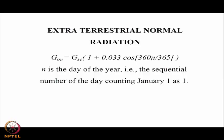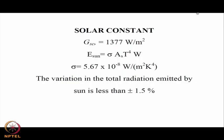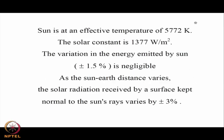On an instantaneous basis, the extraterrestrial radiation is the intensity at any given instant — this is the amount of radiation that will be received by a surface at the actual sun-to-Earth distance on day n. The sun's effective temperature is 5772 K, the solar constant is 1377 W/m², and as the sun-Earth distance varies, the solar radiation received by a surface normal to the sun's rays will vary by ±3%, that is by the factor (1 + 0.033 cos(360n/365)), since cosine varies between −1 and +1.